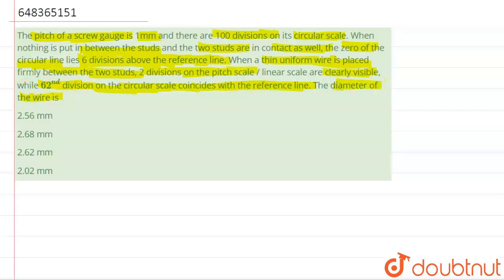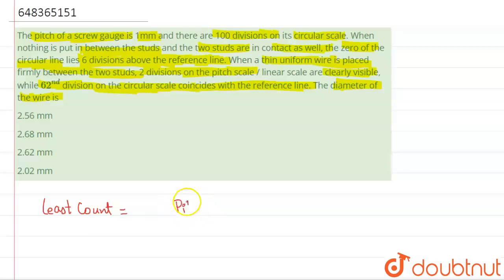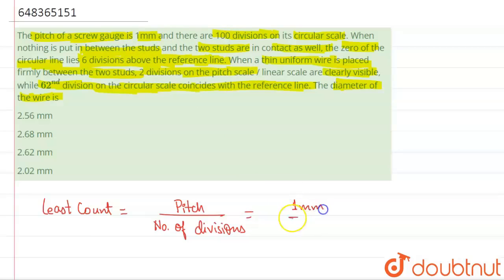We have to find the diameter of the wire. First, we need to find the least count of the screw gauge. The least count equals pitch divided by the number of divisions on the circular scale. So this will be equal to one millimeter divided by 100, which gives us 0.01 millimeter.